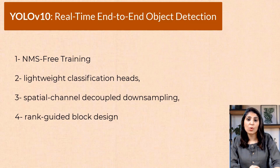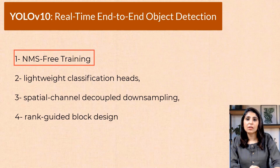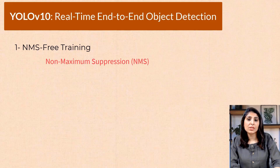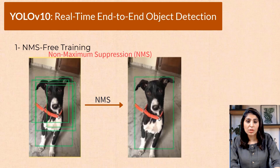Let's start with NMS-free training. To understand what NMS-free training is, we first need to understand NMS. NMS, or Non-Maximum Suppression, is a post-processing step used in object detection tasks to remove duplicate bounding boxes around detected objects. It basically ensures that each object is represented by only one bounding box.